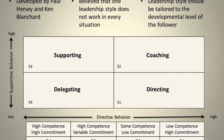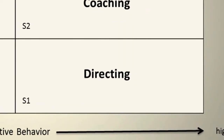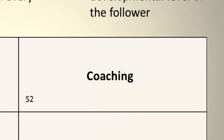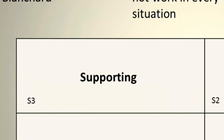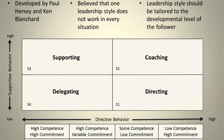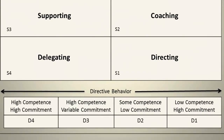We have four different boxes representing leadership styles: directing, coaching, supporting, and delegating. Towards the bottom of the screen there is another table which outlines competence and commitment — the two key variables managers need to consider when choosing a particular leadership style.